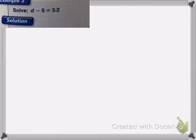This next section is on the unknown numbers. So here we have D minus 5 equals 3.2. Now there's two ways to think about this. I'm going to show you the first way, and then the second.